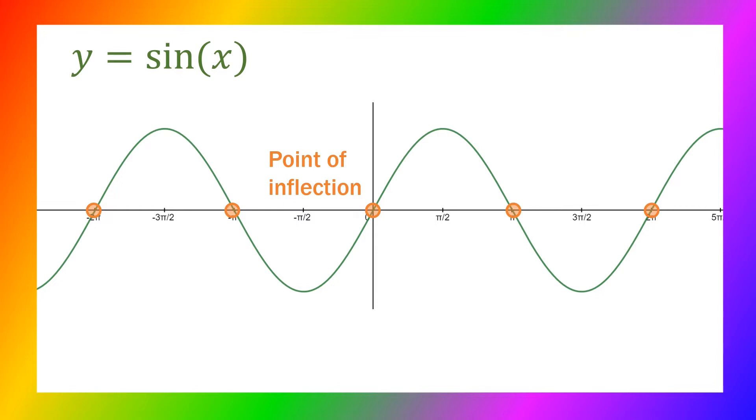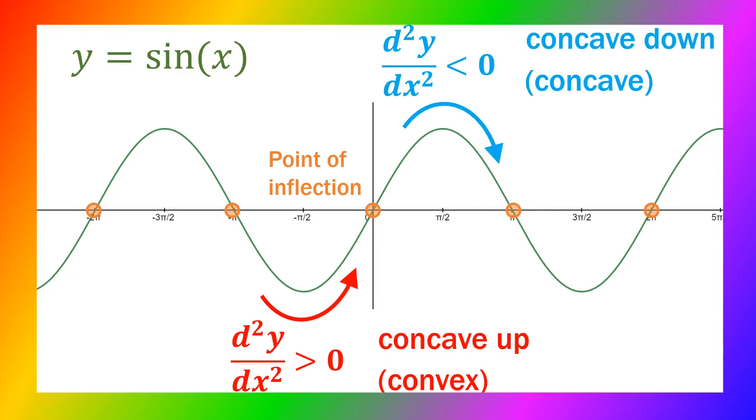In the part of the graph where the gradient is increasing, the second derivative is positive. We say the graph is concave up or convex. And when the gradient is decreasing, the second derivative is negative. We say that's concave down or just concave.